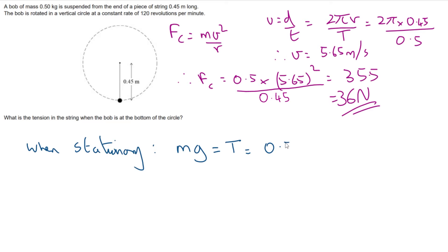So the weight is going to be 0.5 times 9.81 which will be equal to 4.91. This means that the total upward tension in the string is going to be equal to the sum of the centripetal force plus the weight.